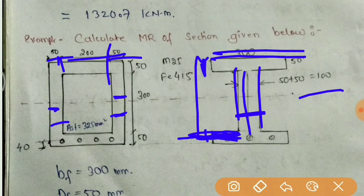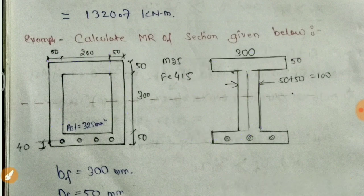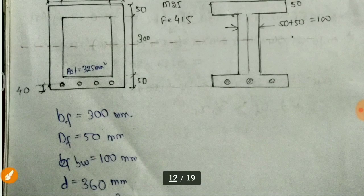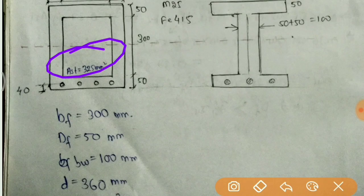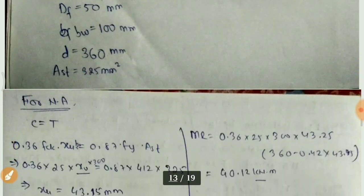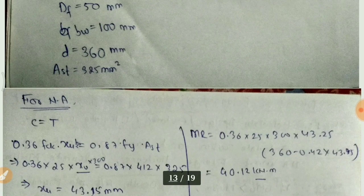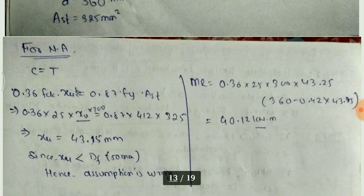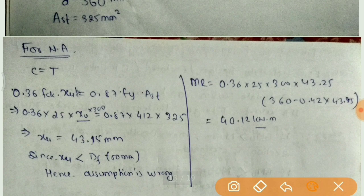जो minus करना है वह करना है। यह सब निकालना पड़ता है। Compression force C calculate करते हैं — C is equal to 0.36 fck × xu × b।